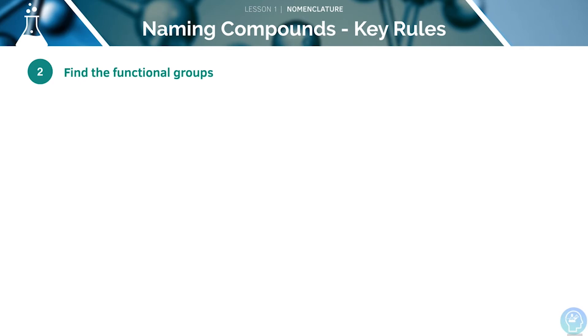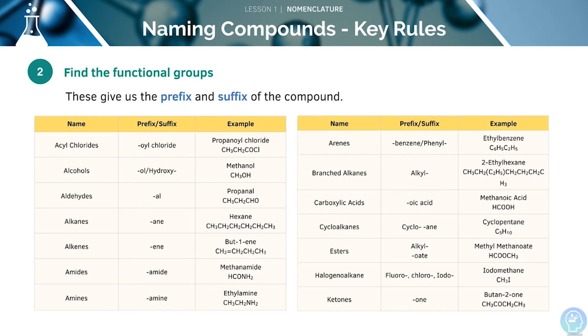Now, we need to find the functional groups. These will give us the prefix and the suffix of the compound. The key ones you need to know are shown here in this table. We have 14 different types in total, with a different prefix and suffix for each one.